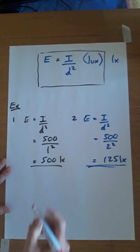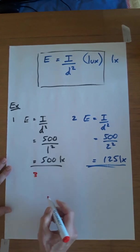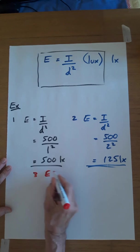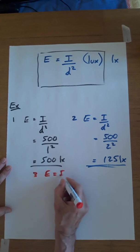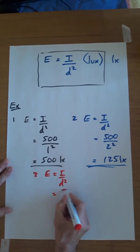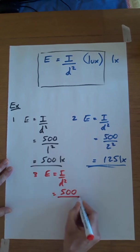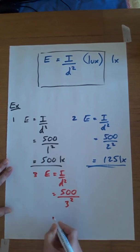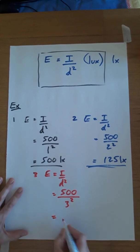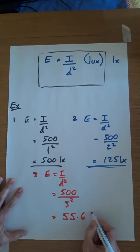And if we do the third of the three examples, take the same formula. E equals I over D squared. Put the numbers in. 500. It's at three metres. And if you work that out, that's going to come to 55.6 LUX.